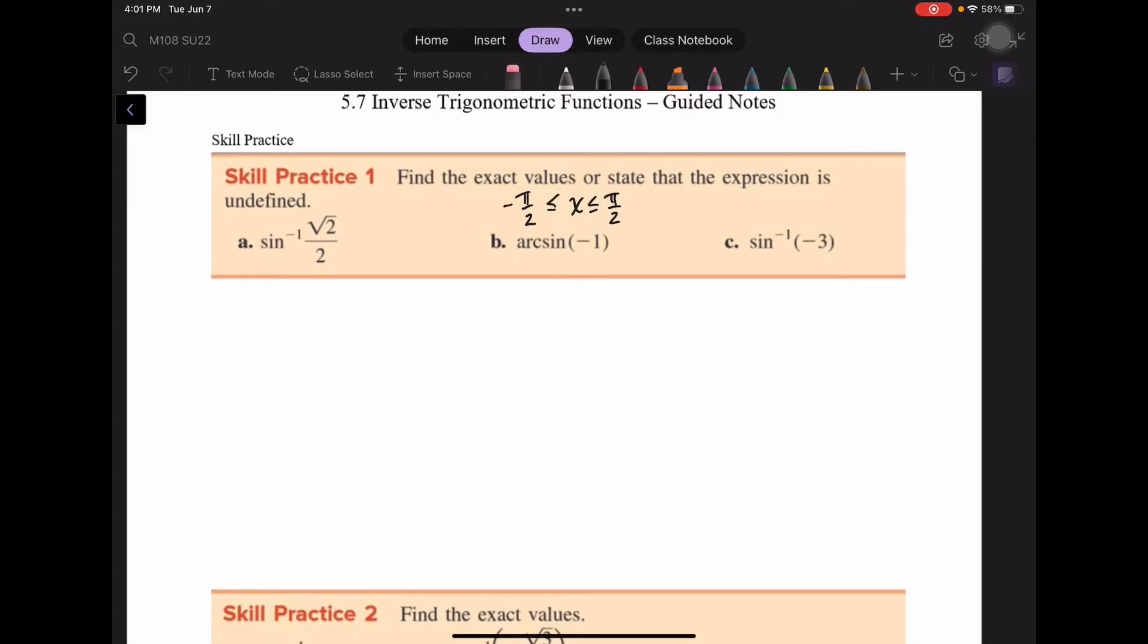Remember that sine is restricted to negative pi over 2 to pi over 2 in order to allow the function to have an inverse. Part A is saying that the sine of some angle theta in between negative pi over 2 and pi over 2 is going to have a value of root 2 over 2. In order to calculate this, the sine is your y value. So when does a y value have the value of root 2 over 2? That happens for pi over 4.